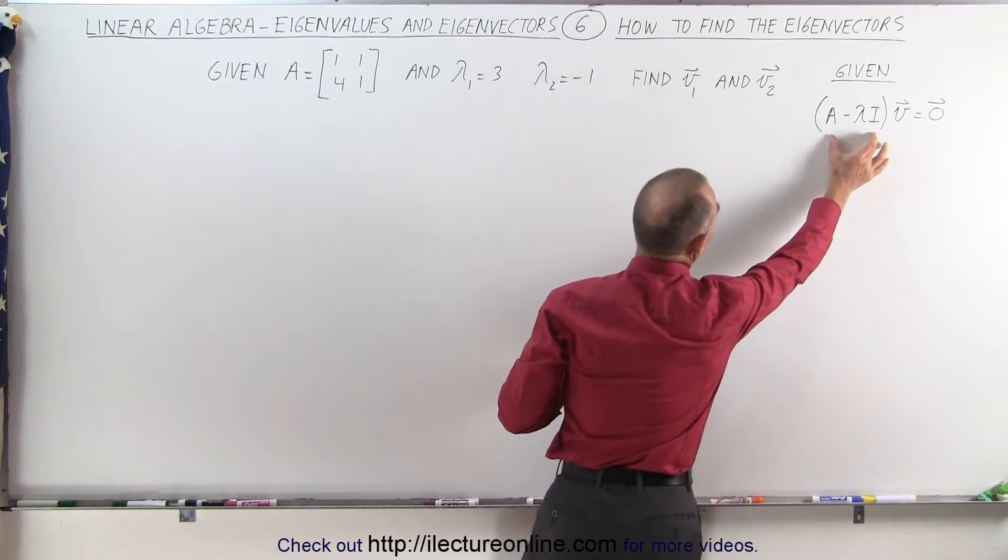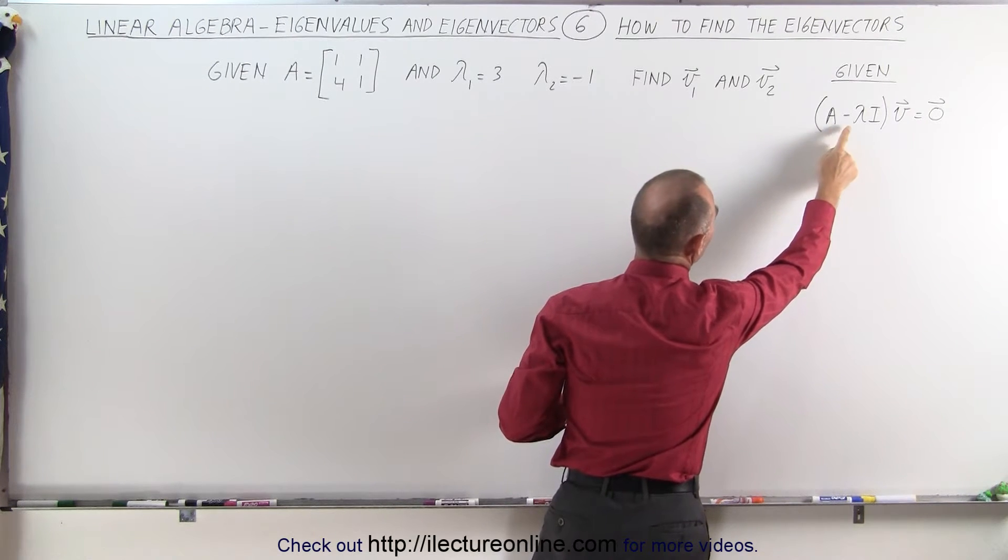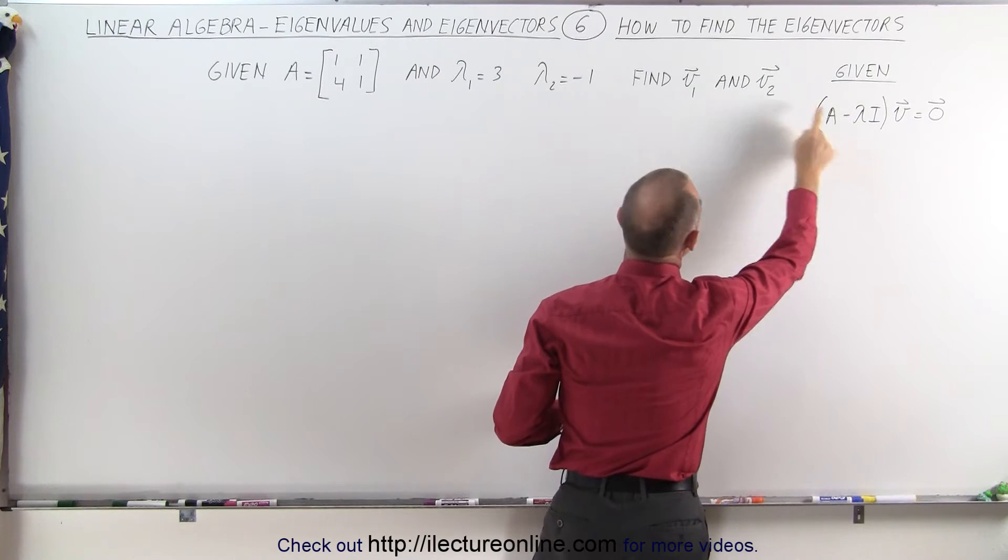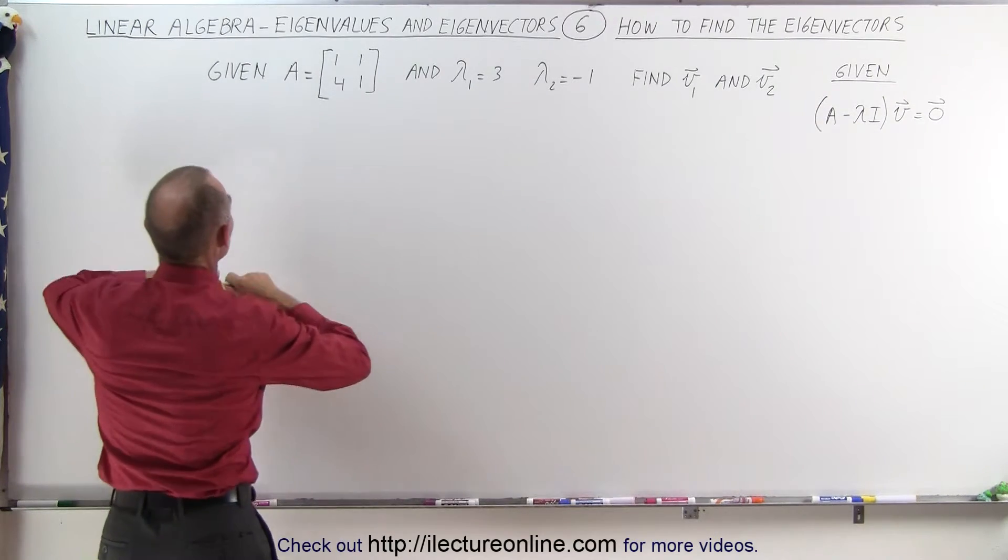We already know how to come up with this. We simply take the matrix, the four elements of the matrix, and subtract lambda, the eigenvalue, from the diagonal elements. That gives us the following.